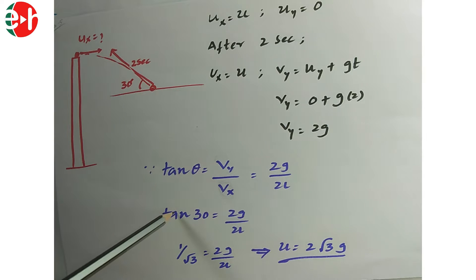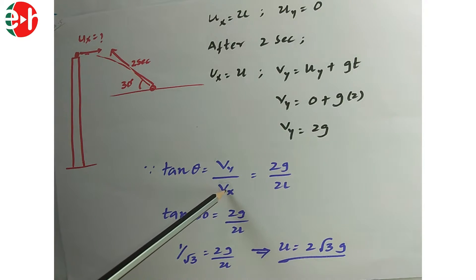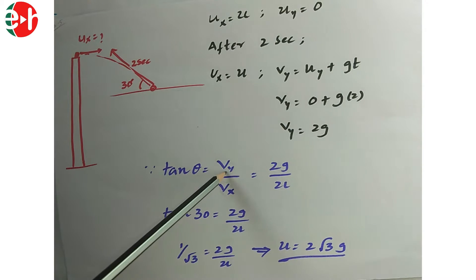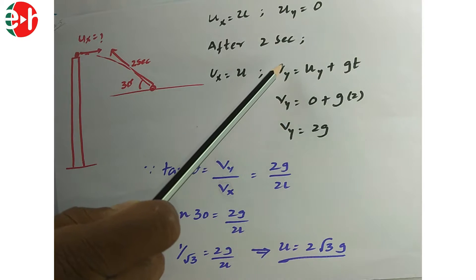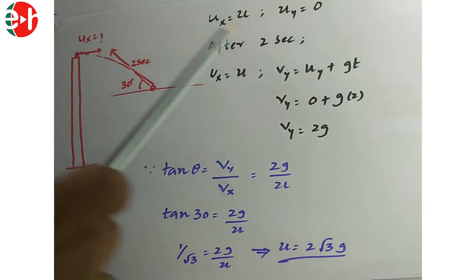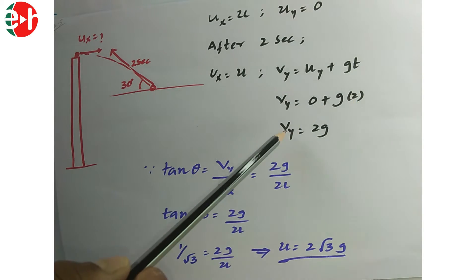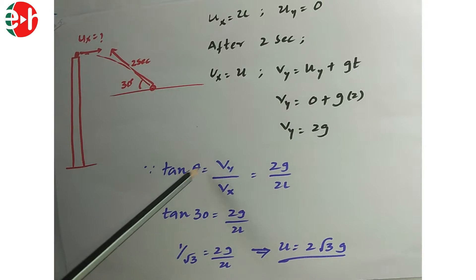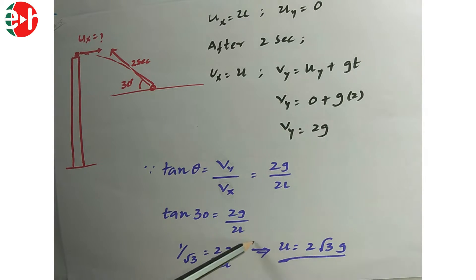With θ = 30°, tan 30 = Vy/Vx where Vx = U. To find Vy: Vy = Uy + g·t = 0 + g×2 = 2g. So tan 30 = 2g/U. Upon simplification, U = 2√3·g.